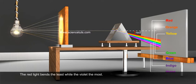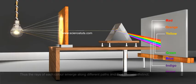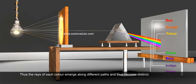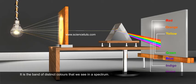The red light bends the least, while the violet the most. Thus, the rays of each colour emerge along different paths and thus become distinct. It is a band of distinct colours that we see in a spectrum.